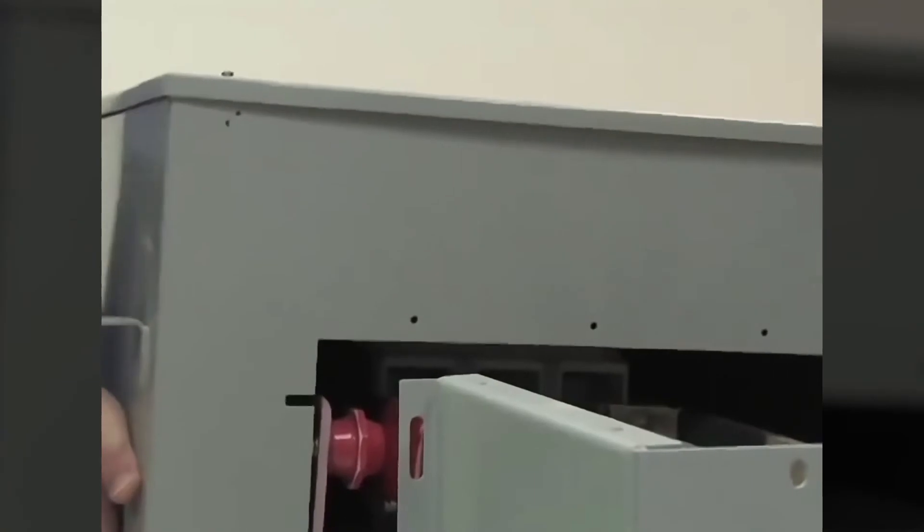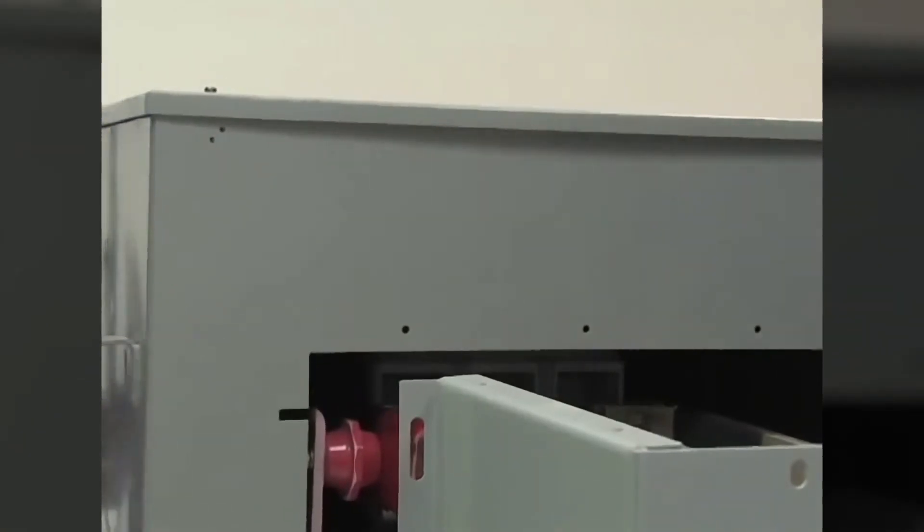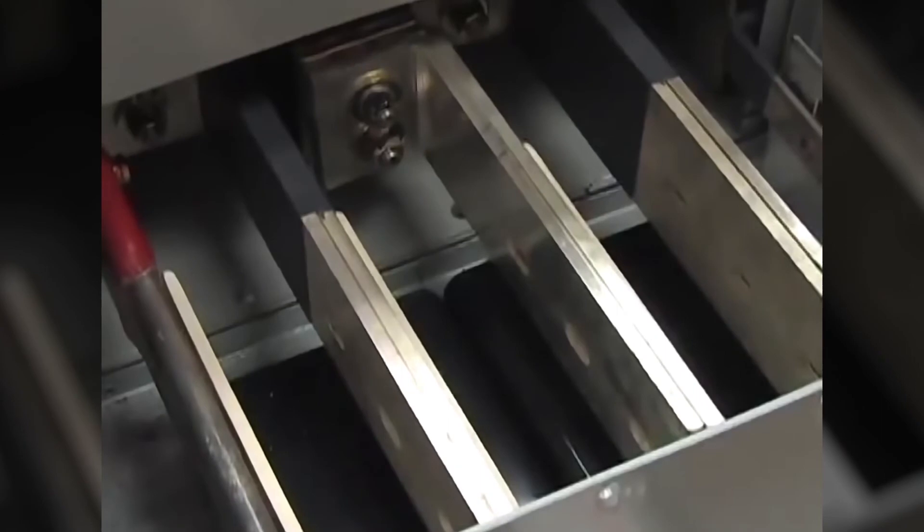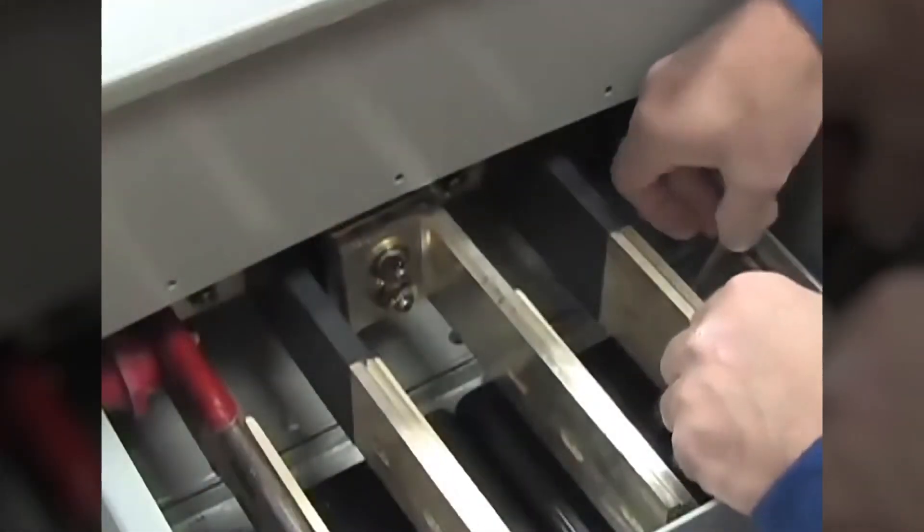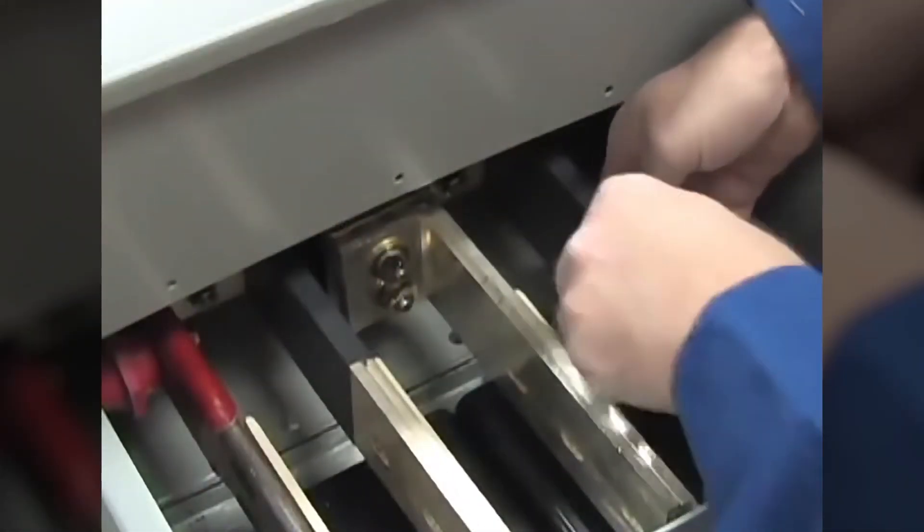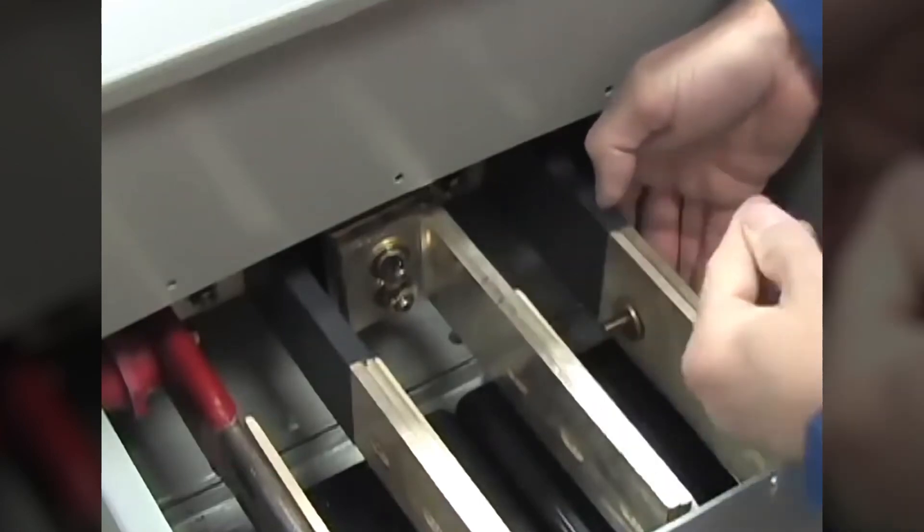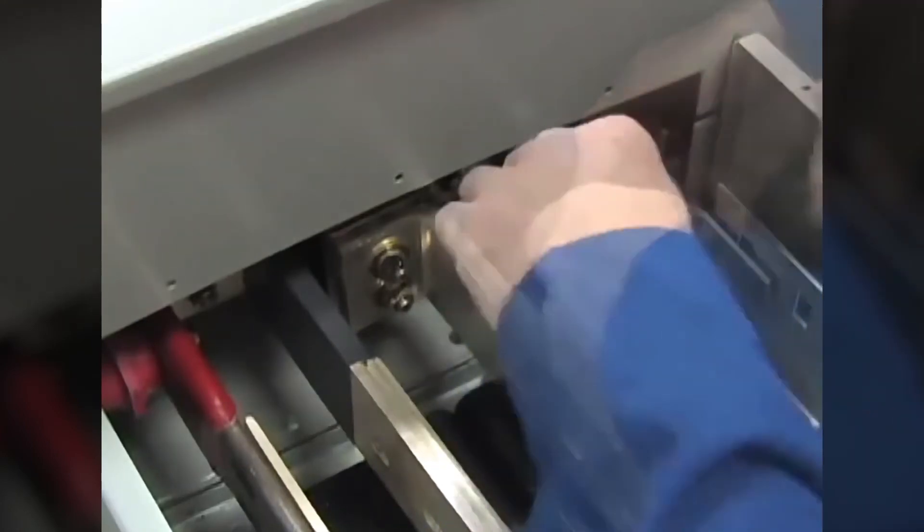Here, we have removed the top cover to install the bolt-on circuit breaker. Position the bolt-on circuit breaker so that the connector bars match up with the connectors in the power takeoff box. Then, attach the bolt-on circuit breaker bars with the power takeoff connectors with the supplied hardware.